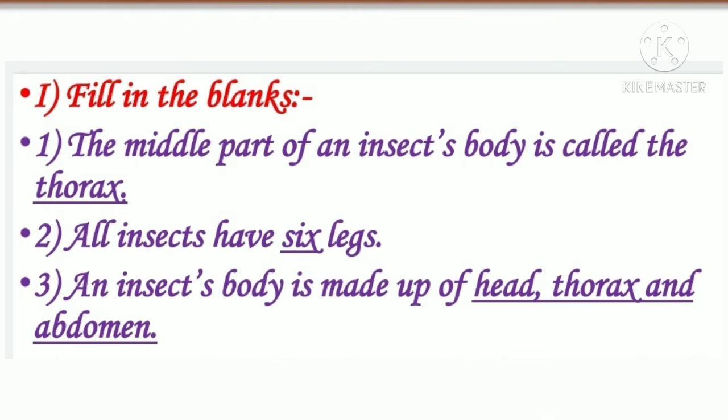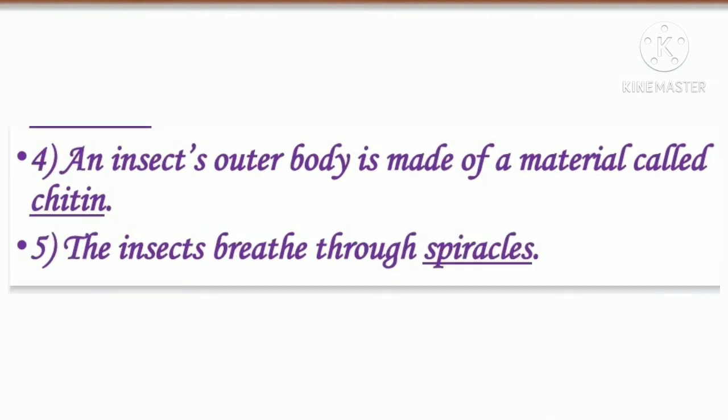First question: fill in the blanks. First one: the middle part of an insect's body is called the thorax. Second one: all insects have 6 legs. Third one: an insect's body is made up of head, thorax and abdomen. Fourth one: an insect's outer body is made of a material called chitin. Fifth one: the insects breathe through spiracles.